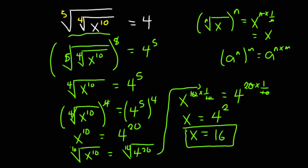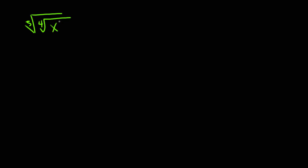Now let's look at the second method. Let me rewrite the question: we are looking at the fifth root of the fourth root of x exponent 10, and this is equal to 4.